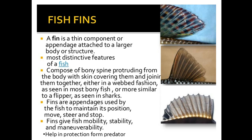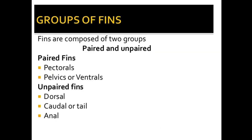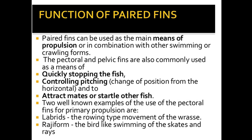Fins also help protect fish from predators; they may be modified or colored in ways that deter predators. Fins can be grouped into two categories: paired and unpaired. Paired fins are the pectoral and pelvic fins. Unpaired fins are the dorsal, caudal, and anal fins. Pectoral and pelvic fins are always paired, while dorsal, caudal, and anal fins are single unpaired structures.